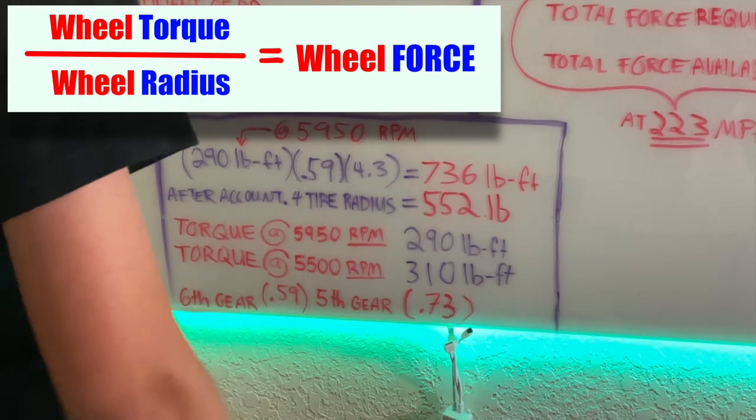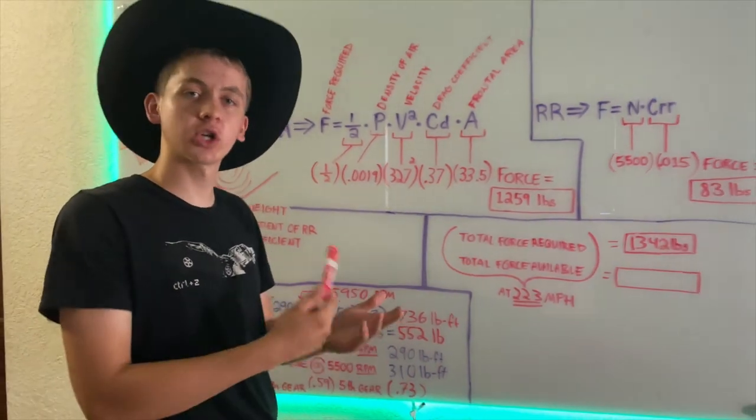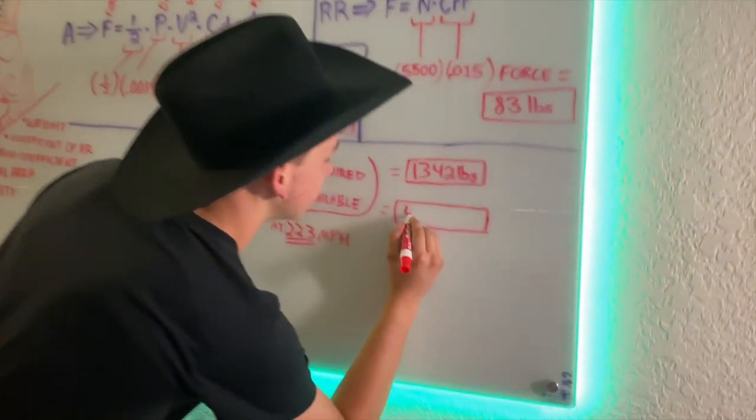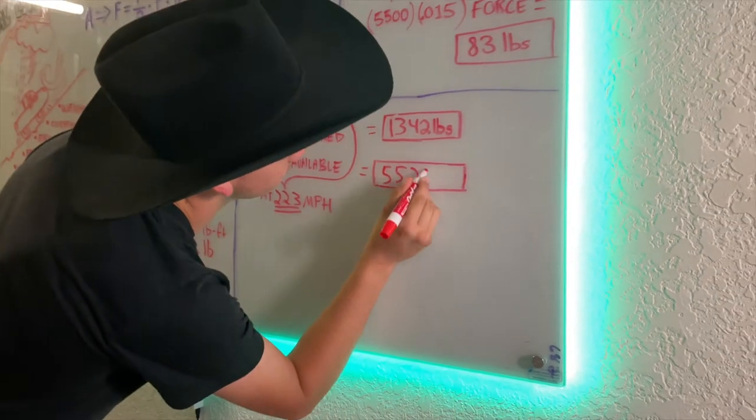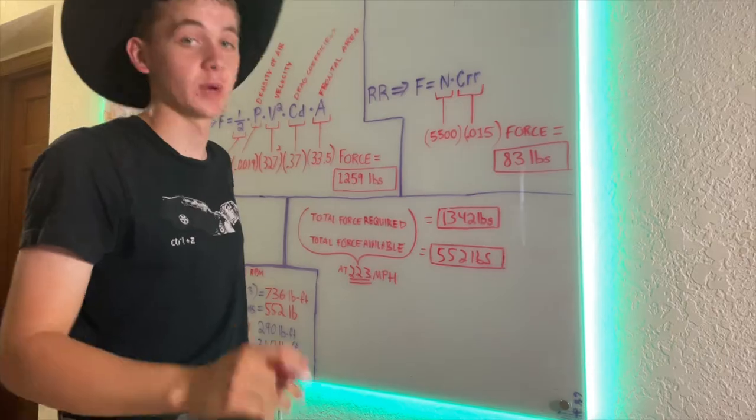After accounting for tire size and converting torque to force, we have 552 pounds of force hitting the road. That's pretty generous, assuming no loss from friction in the drivetrain or heat. Correct me if I'm wrong, but I'm pretty sure 552 pounds of force is less than the 1342 pounds of force that we need. All that to say, with current conditions, my truck cannot go 223 miles an hour. We're gonna have to make some changes.